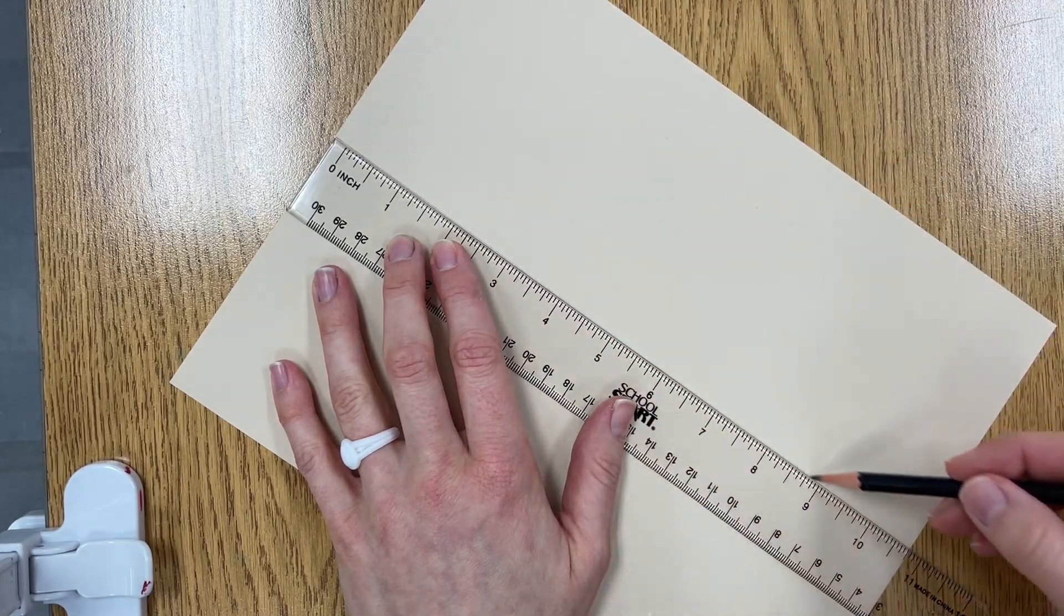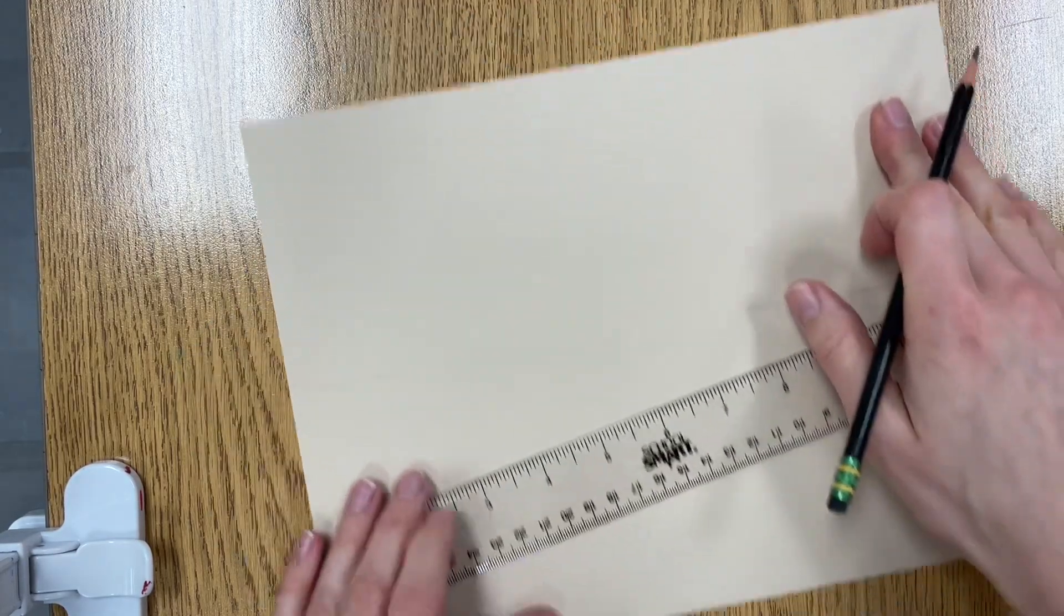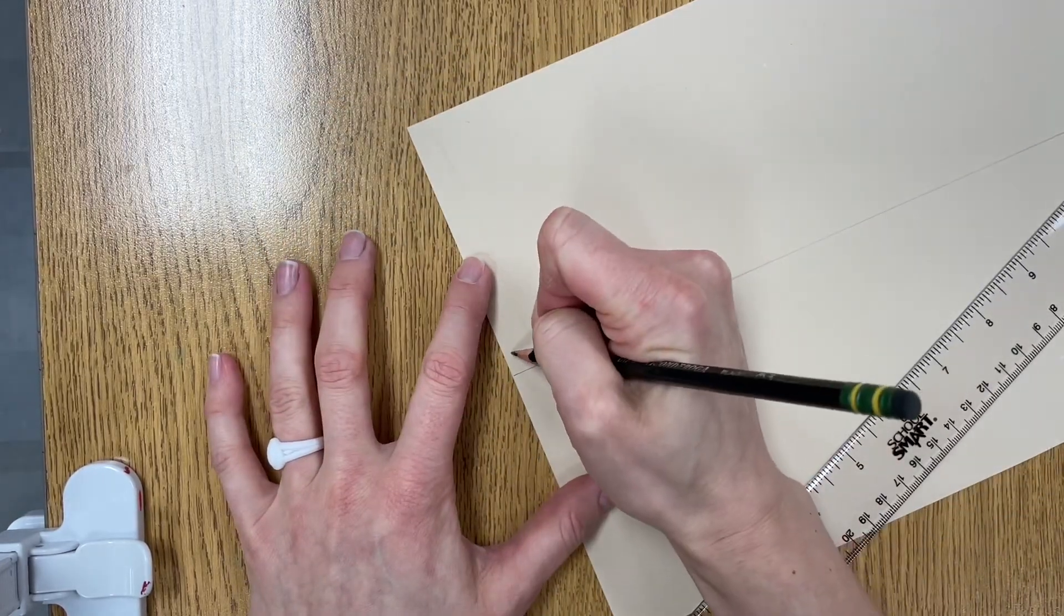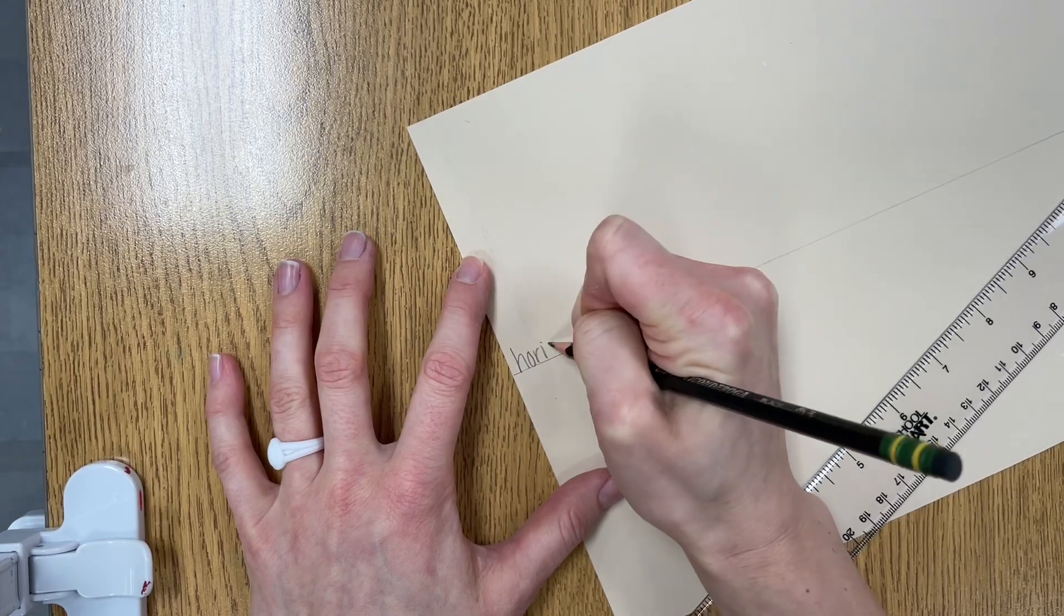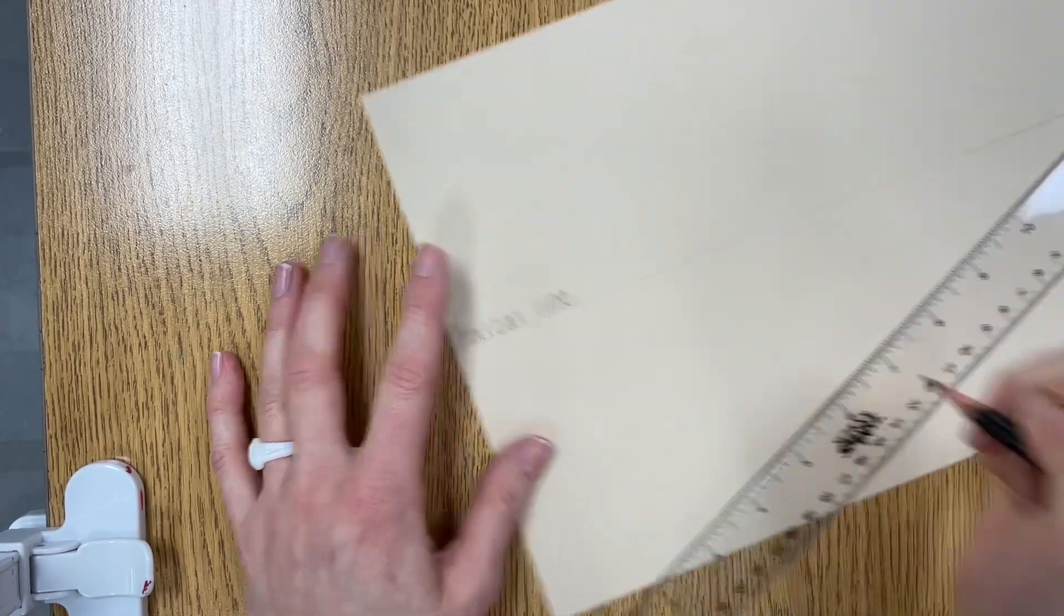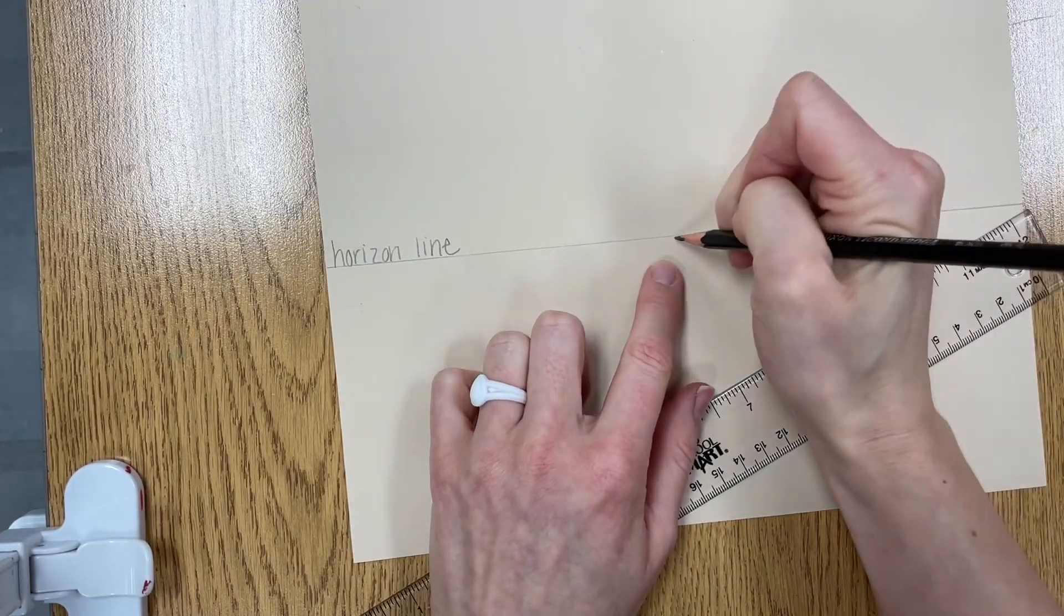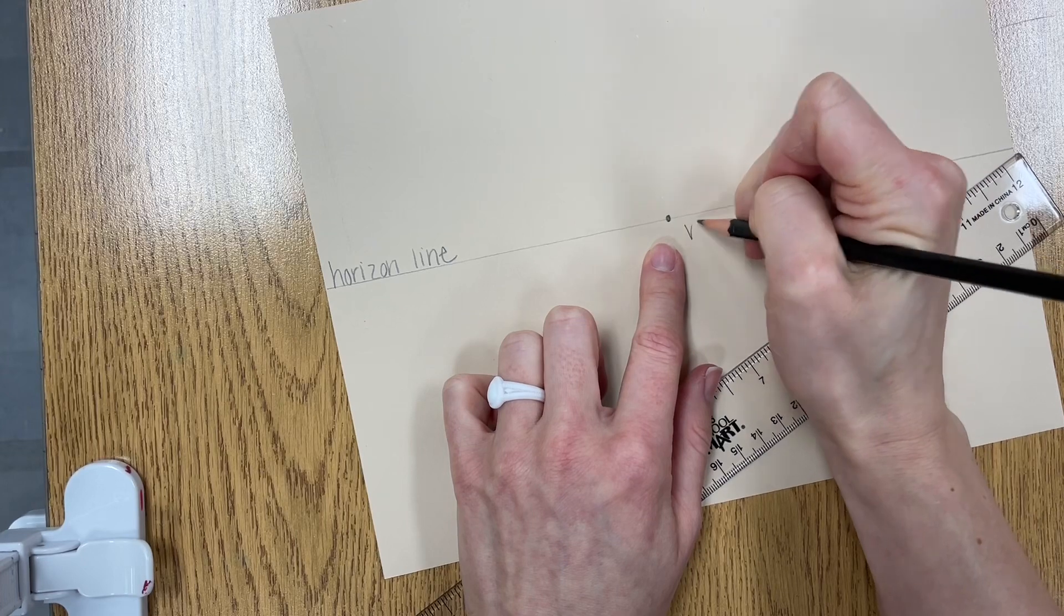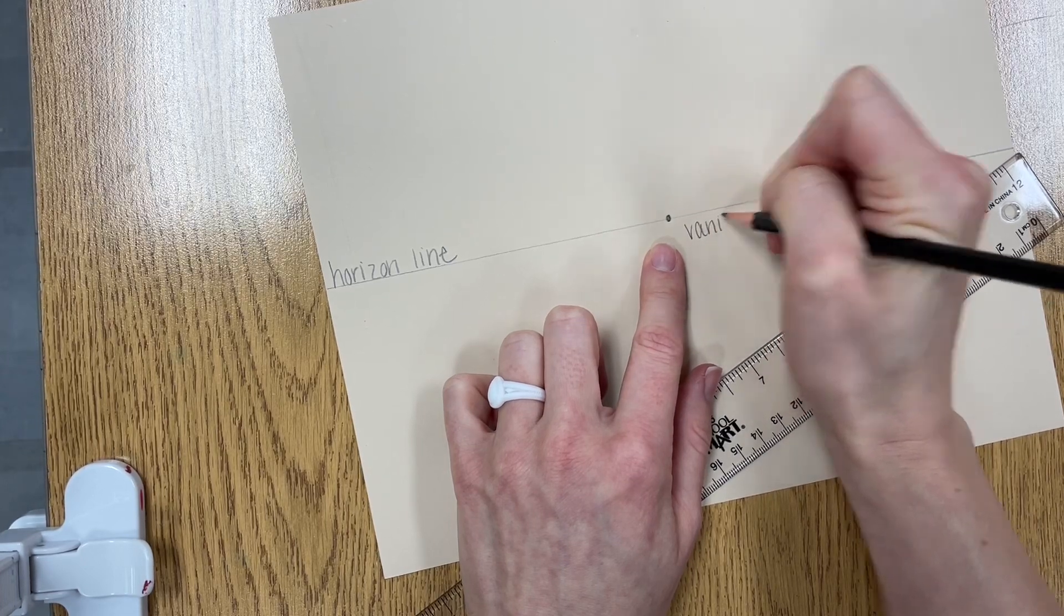And I would suggest while you're working on this drawing to draw lightly. Also I would suggest to label some of the things that I label to help you remember the vocabulary for certain parts of the lines during this drawing project. Next you'll add a vanishing point, just a point in approximately the middle and I'm labeling it vanishing point.